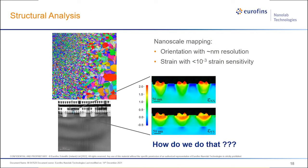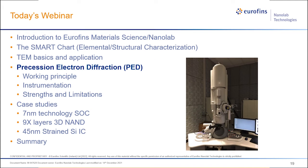Besides chemical analysis, TEM can also provide structural information. For example, it can provide grain orientation mapping — just like EBSD but at higher resolution — and strain mapping at nanometer resolution with 10⁻⁴ strain sensitivity. The technique that enables this is precession electron diffraction, PED, which brings us to the next part of the talk.